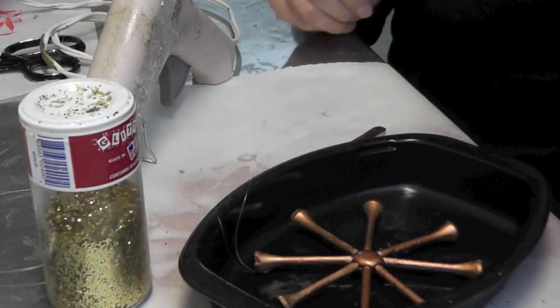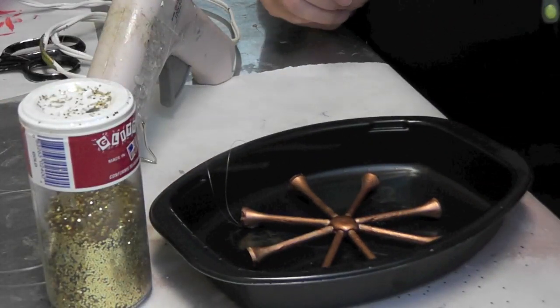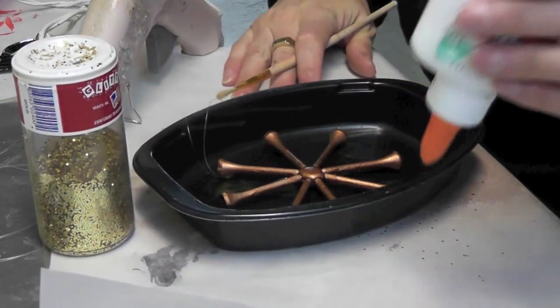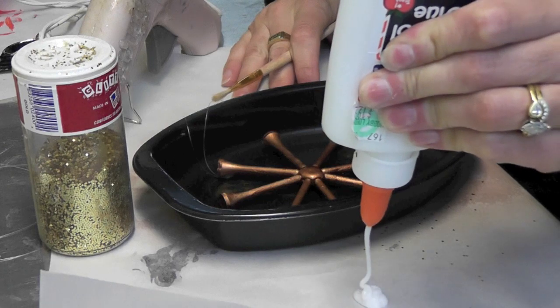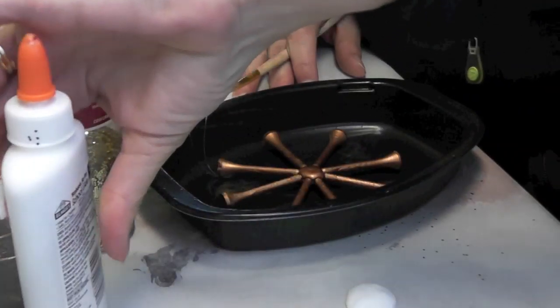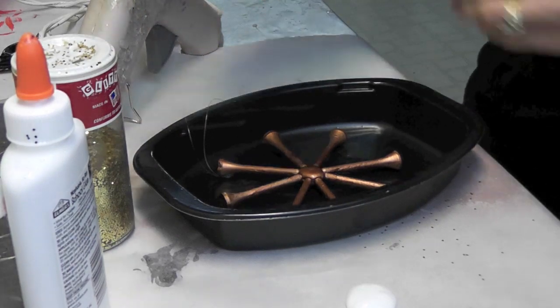Okay, and I'm working in a tray just to keep it a little bit neater. And you could work with a Mod Podge, or just a regular white glue, I'm just doing the regular white glue. It's a little bit thicker, so I kind of like it for this maybe just a little bit better.